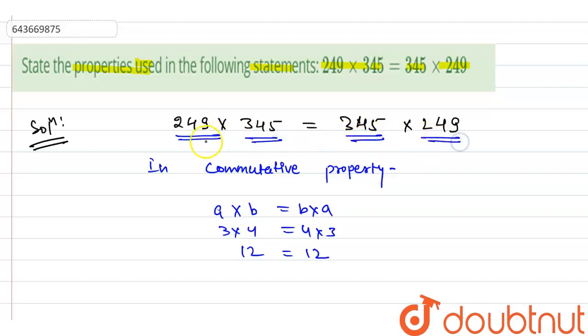Means if we will take 249 as A and 345 as B, so 345 will be B here and 249 will be A here. Means it is following the property, commutative property.